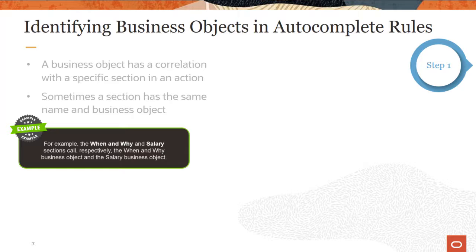A business object has a strong correlation with a specific section in an action. Sometimes a section has the same name and business object no matter what action they are a part of. For example, the when and why and salary sections each have the same names across all actions in which they appear, and they call the business objects with the same names — the when and why business object and the salary business object.